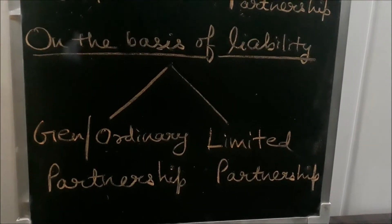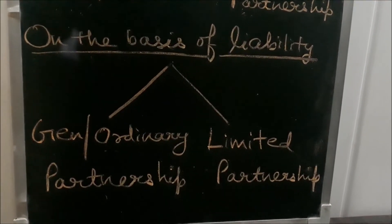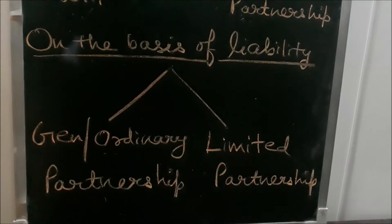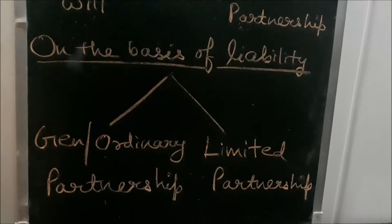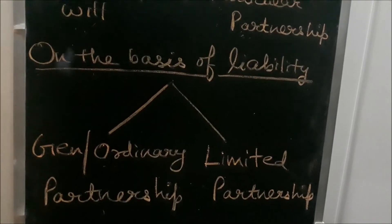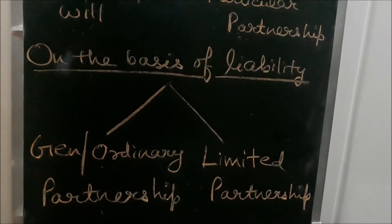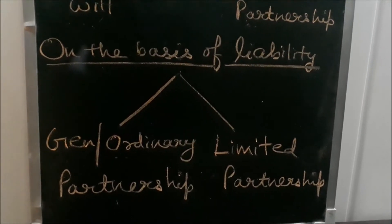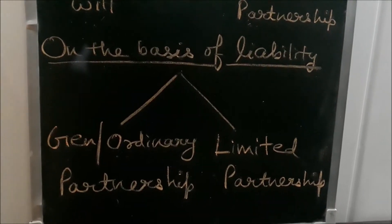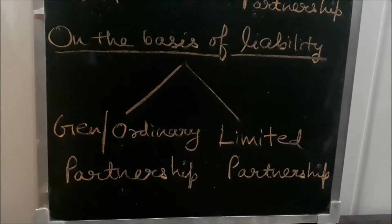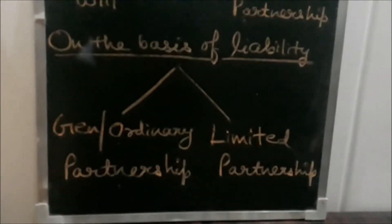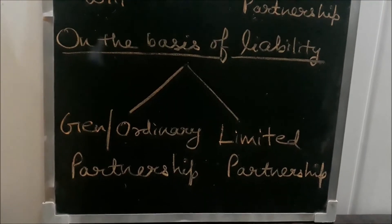In case of general partnership, first, all the partners have unlimited liability. Second, all the partners are allowed to participate in the management of the firm. Third, any agreement signed by one partner will bind the other partners as well as the firm. Fourth, death, lunacy, insolvency, or bankruptcy of any partner results in the dissolution of the whole firm — meaning the firm will come to an end.